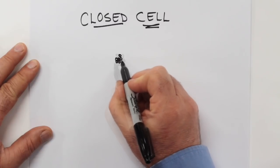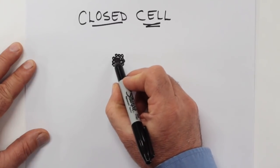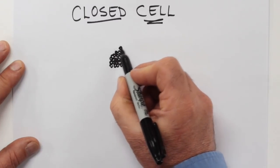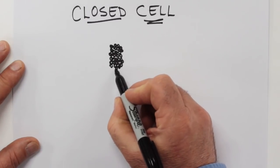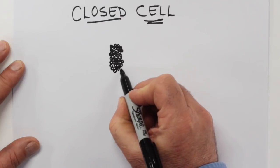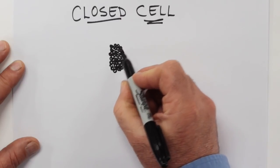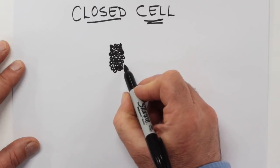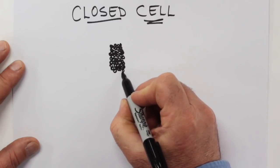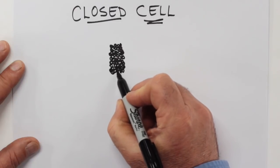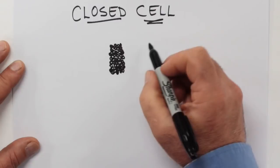Now as the name suggests, closed cell is made of a whole bunch of closed cells, and this matters because it affects how this particular kind of spray foam behaves in the real world. When it's applied thickly enough, it can act as its own vapor barrier. That's a very important and useful quality.